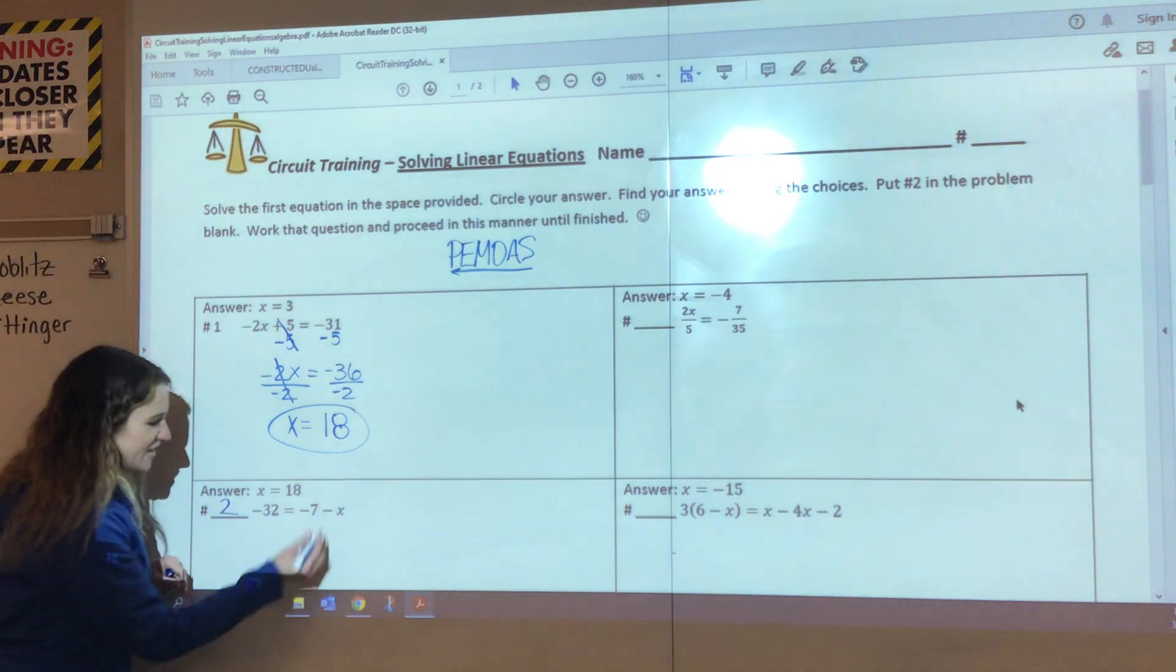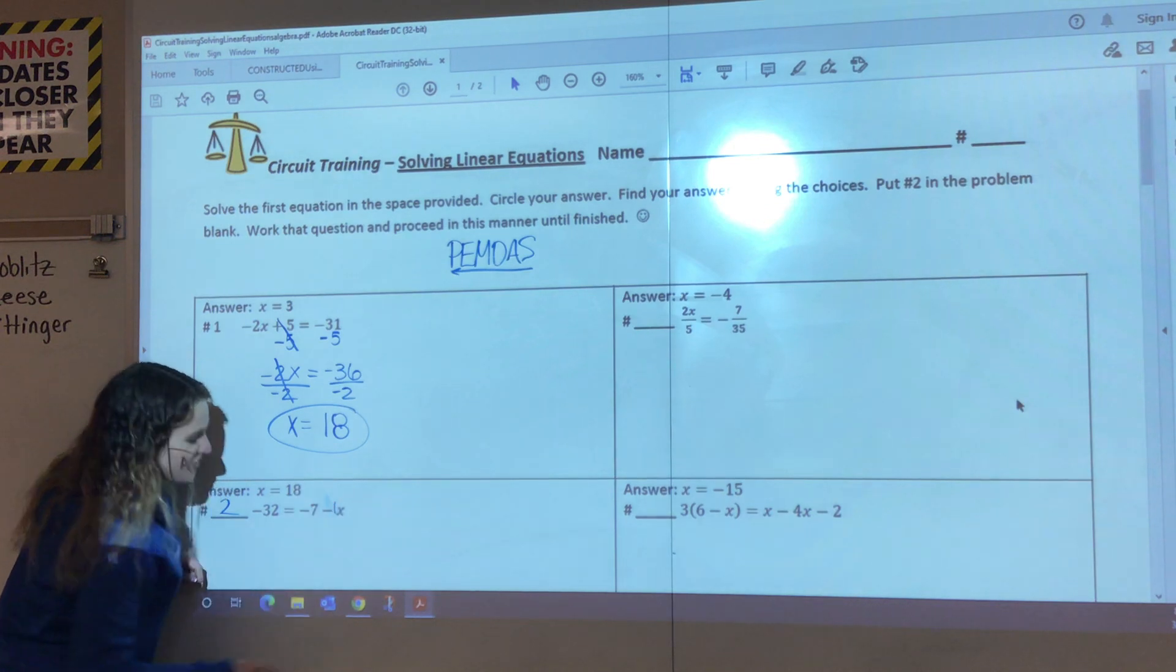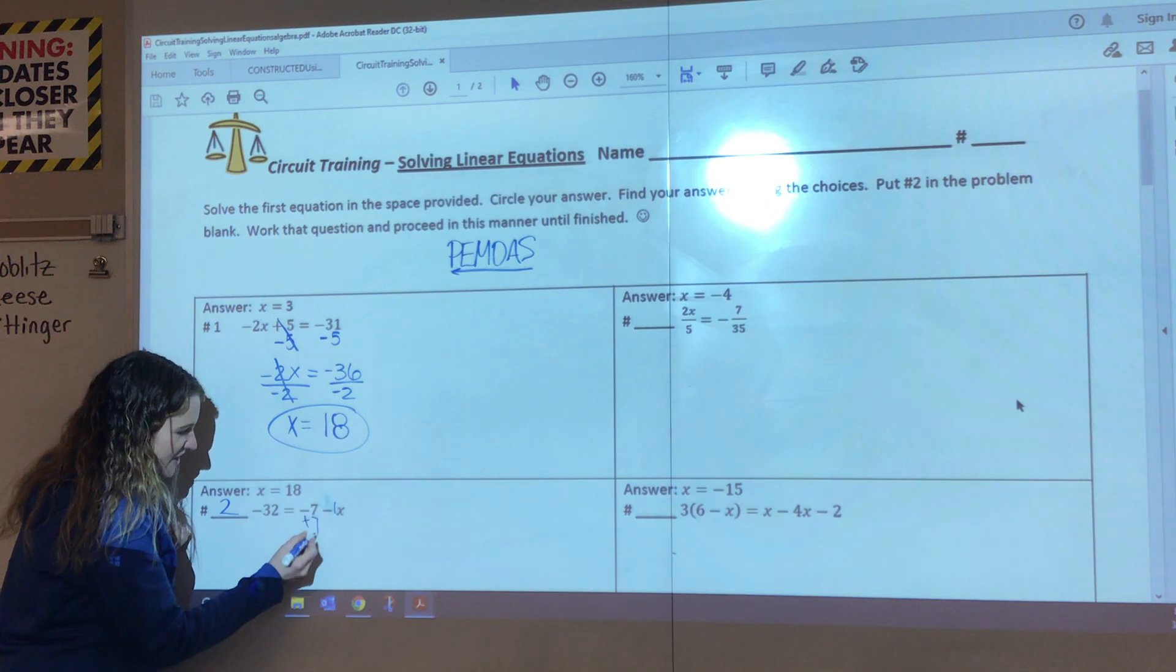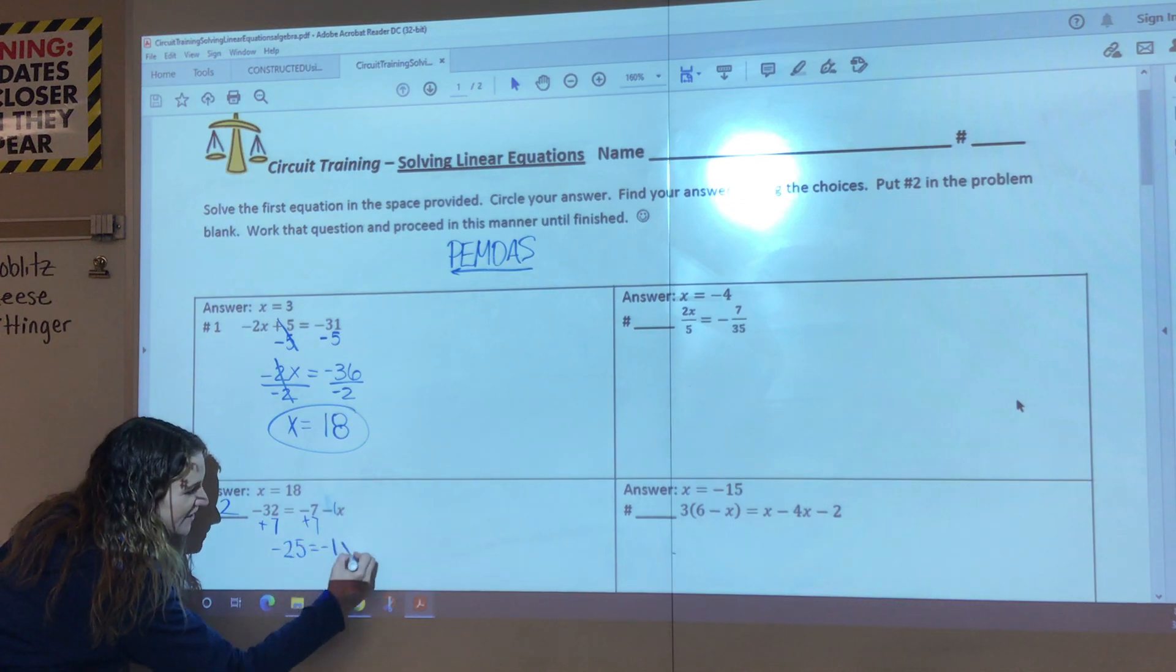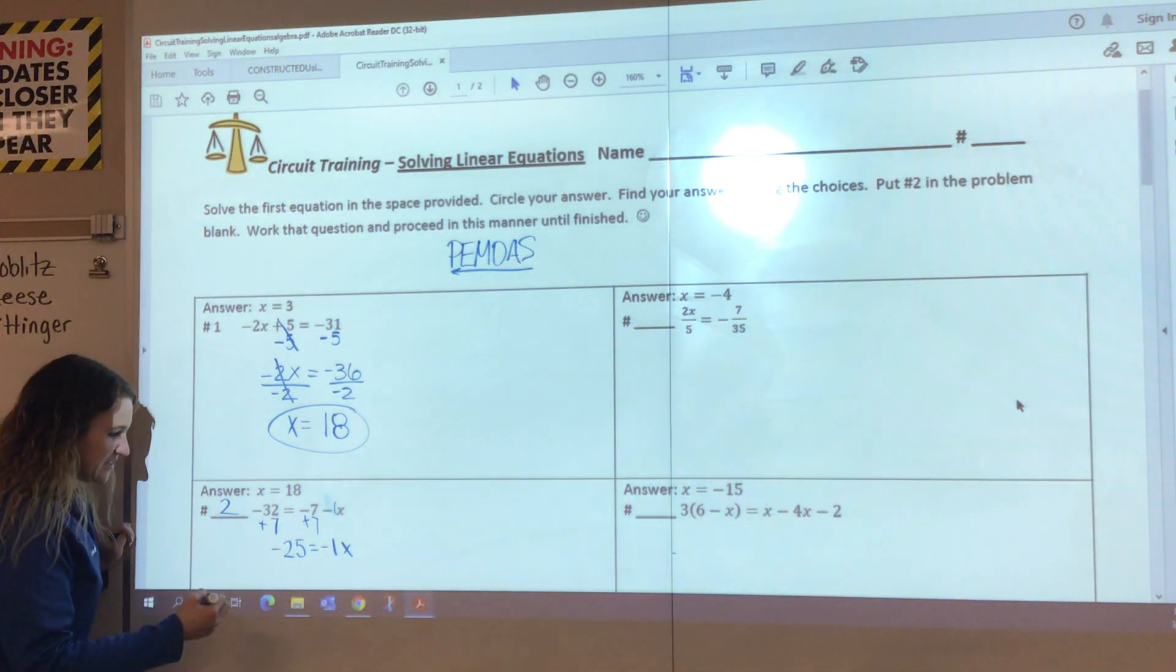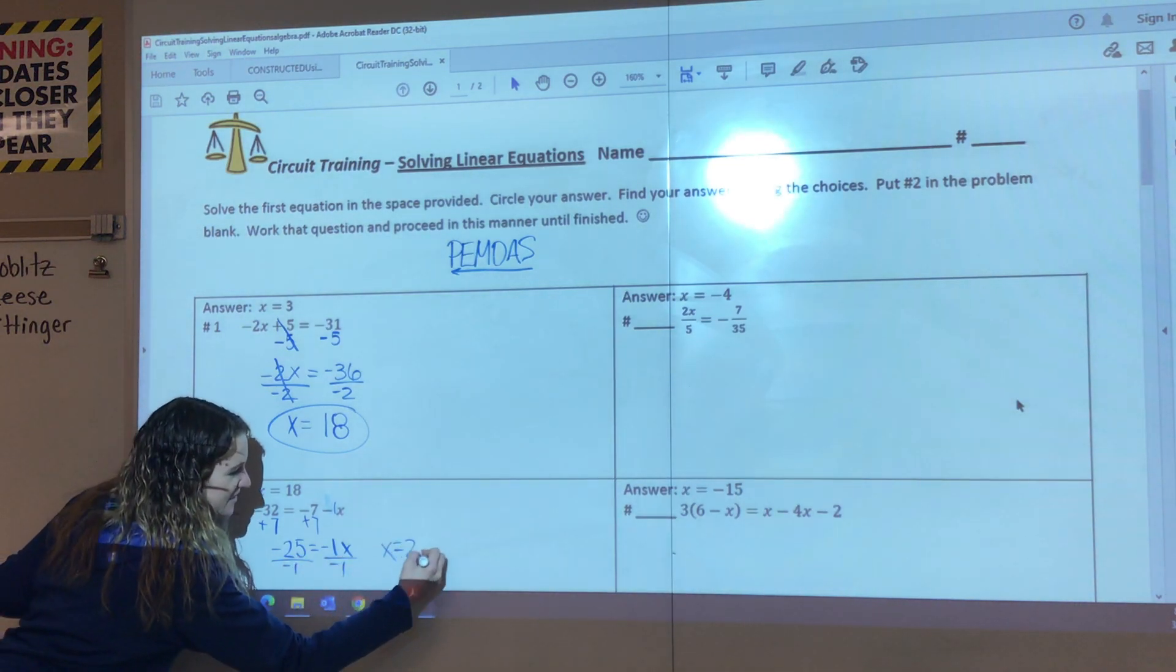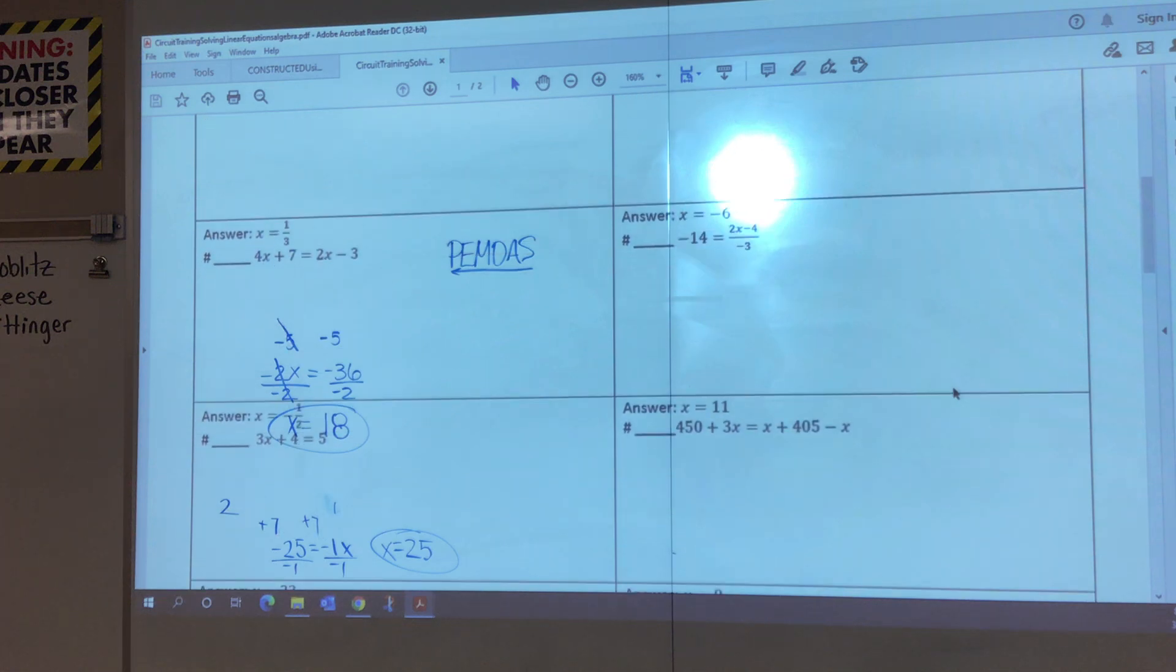All right, same situation. Trying to get this x by itself. I know it's attached to that -1x. I'm just going to draw on that one. On this side, there is subtraction, so I'm going to add 7 on both sides. That'll give me -25 equals -1x. I know I need to divide next. Divide by -1, and x equals positive 25. I'm going to circle that. Now I'm going to have to move the board or the paper around a little bit. I know you can see all the answers, but I can't. But I'm looking for 25 as an answer.